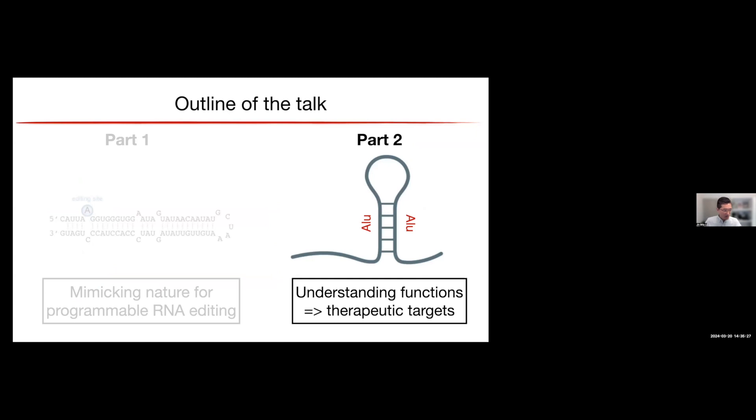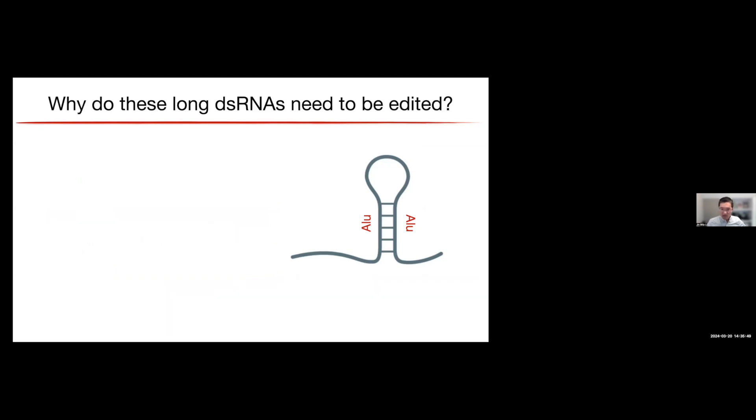All right. So, do I still have time? Yeah. So maybe just for the next couple of minutes, I quickly tell you almost very different aspect from the part one, but of course, it's all ADAR-related. So, as I mentioned, the majority of the double strands in our cells are formed by very long double strands, often repeats.